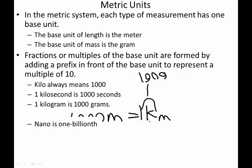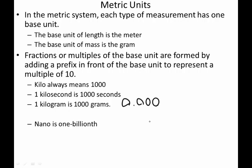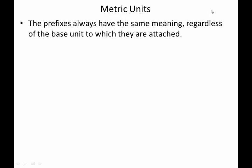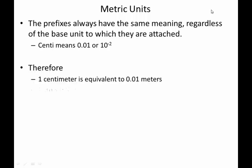Nano, for example, is one billionth. So one billionth would be .000 and I have to actually count them out. So tenths, hundredths, thousandths, ten thousandths, hundred thousandths, millionths, ten millionths, hundred millionths, billionths. So one billionth. So a nano is one billionth. So one nanometer is a billionth of a meter. Nanoliter is a billionth of a liter, et cetera. So here's the important thing: no matter which base unit they're attached to, prefixes always have exactly the same meaning. So centi always is .01 or ten to the negative two. Therefore centimeters always equivalent to .01 meters.